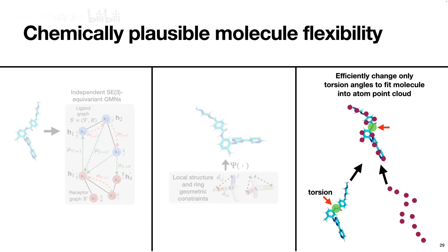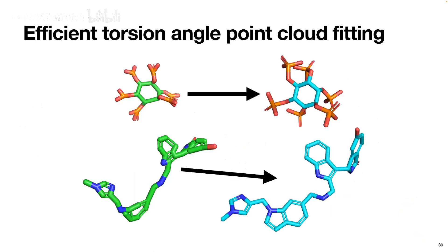Here is a visualization: on the left we have the molecule after all GNN layers—they look kind of okay, but especially at the bottom the rings are far too squashed together and the bond lengths are a bit too short. After we do this efficient torsion angle point cloud fitting step, which is very fast, we end up with structures that really look like realistic molecules. These are then what we fit into the protein with the key point mechanism discussed earlier.